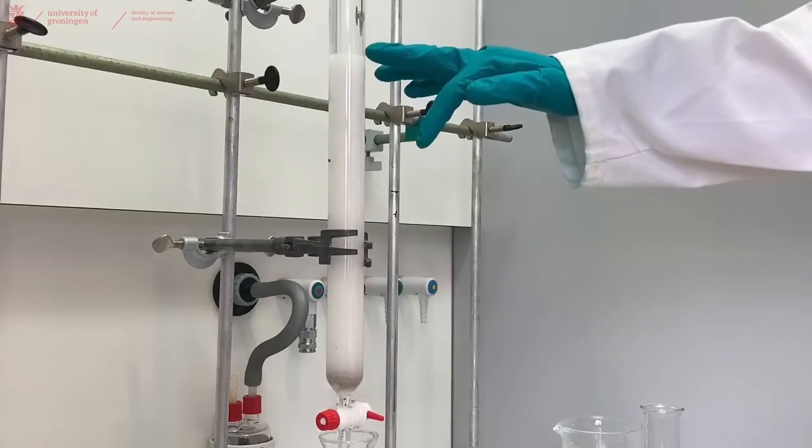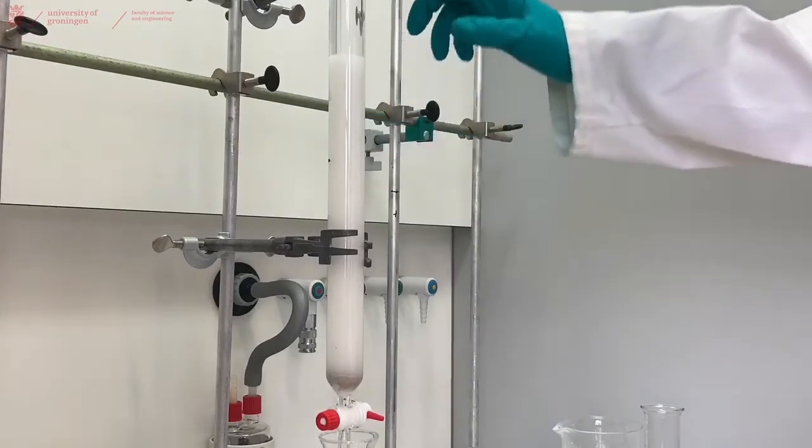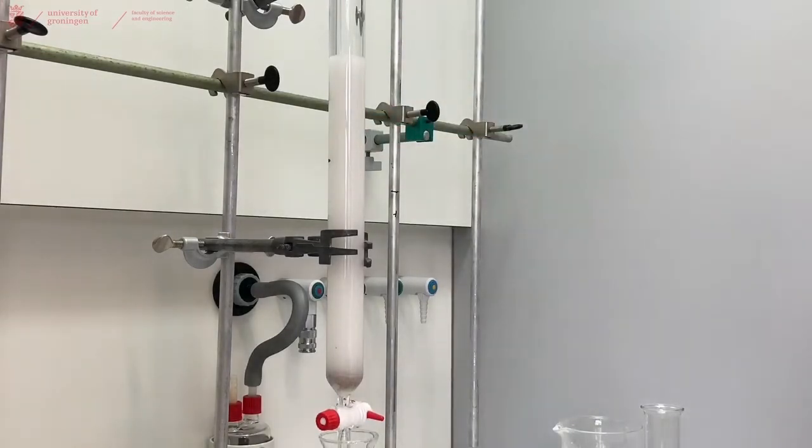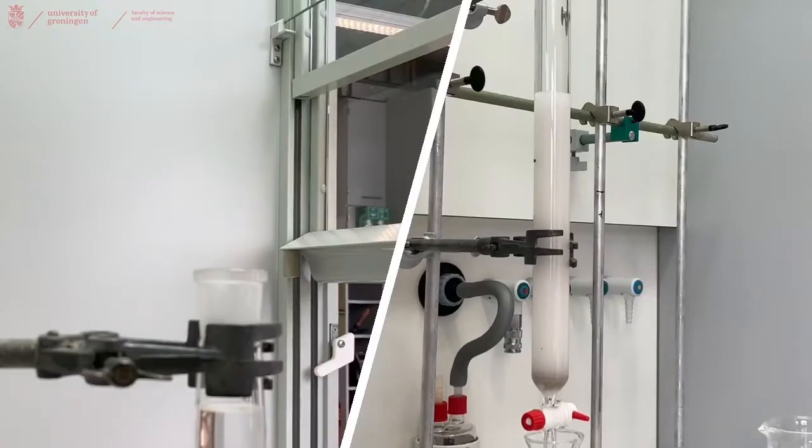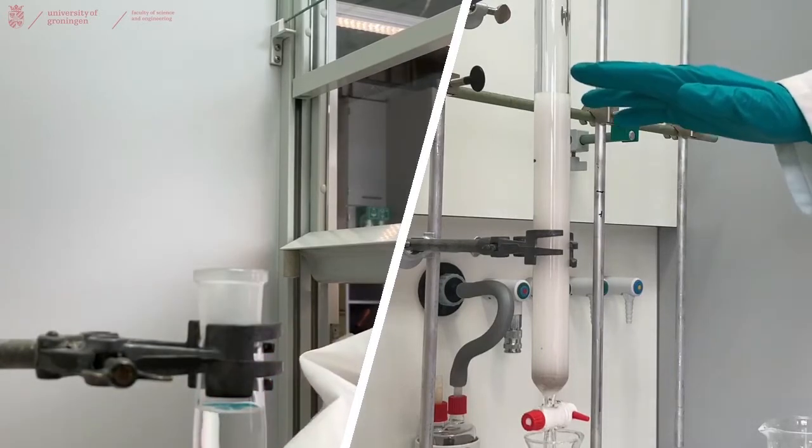As you can see, the silica is slowly settling down in the liquid, but there is still a bit of silica on the top which you can rinse away with a small pipette and some of the eluent. As you see, the settling will take quite some time.